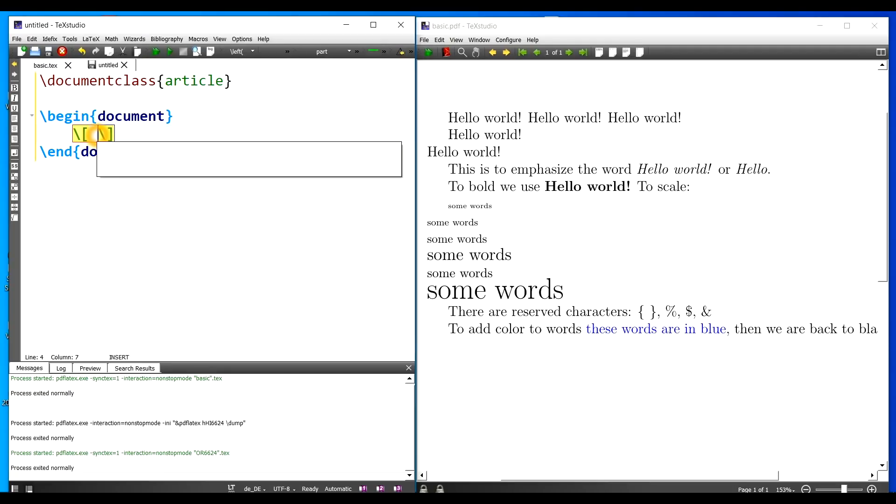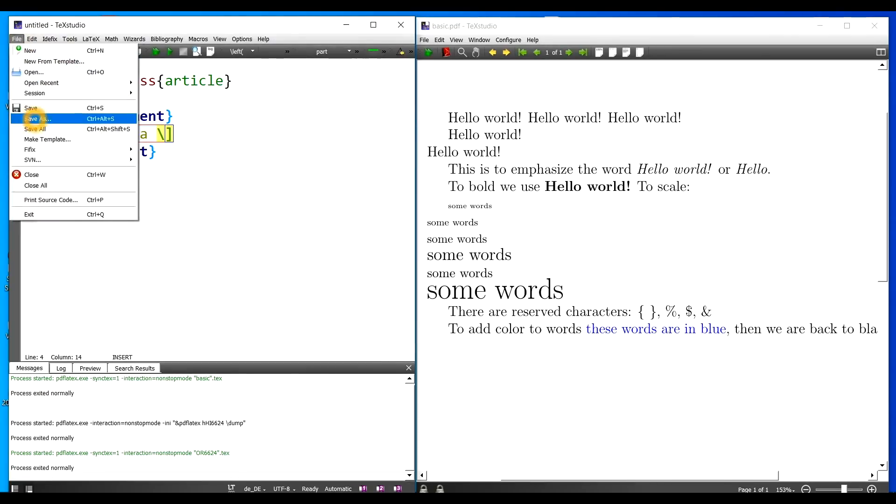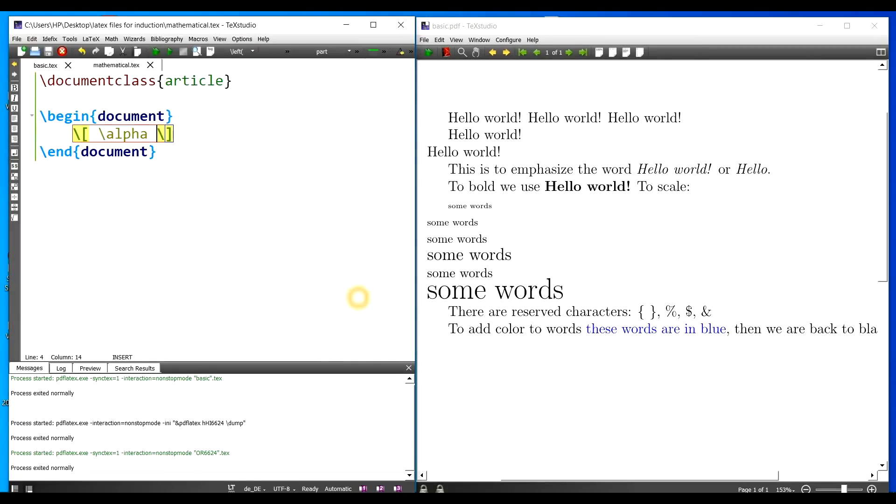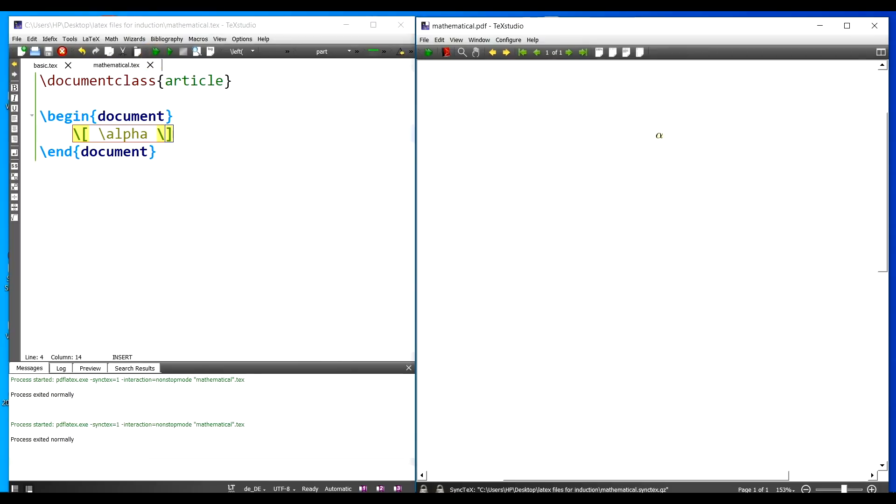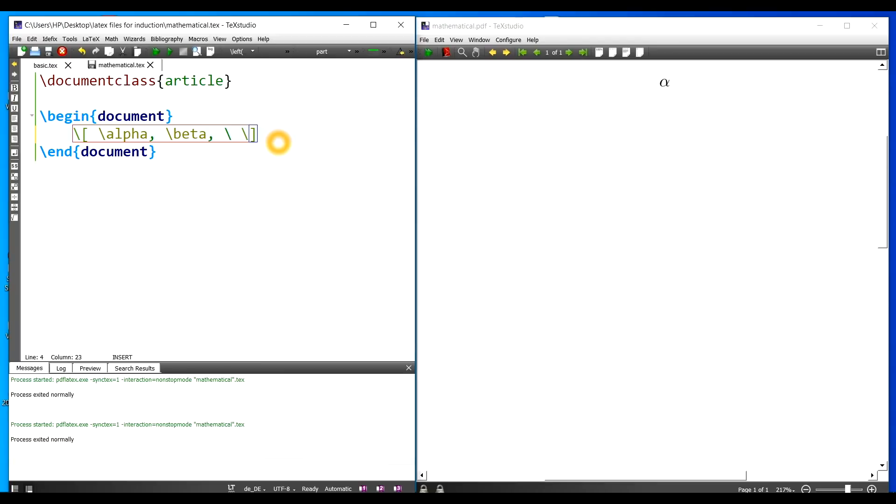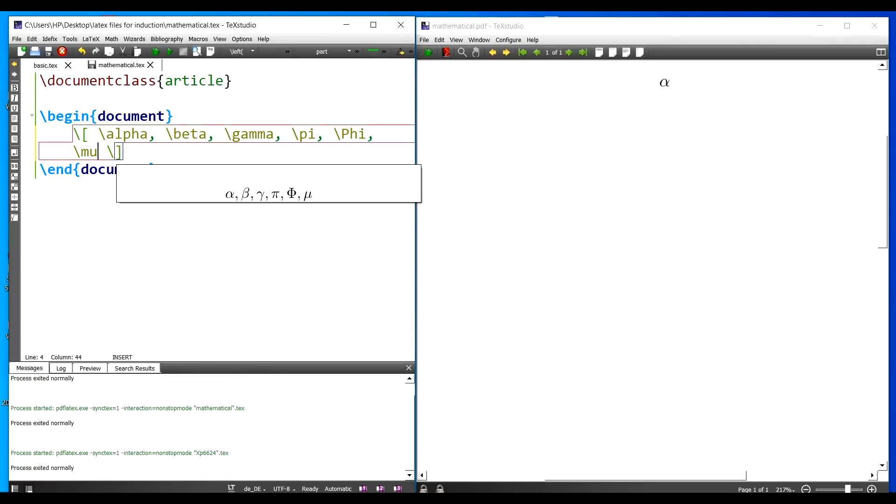Let's begin with Greek symbols. Let me write slash alpha. Let's save this file, save it as mathematical. Let's execute it. You can see the symbol alpha here. Now let me write slash beta. Let me make a list: gamma, phi, mu. There is a whole list. You can go to the help menu and look at whatever symbol you need.